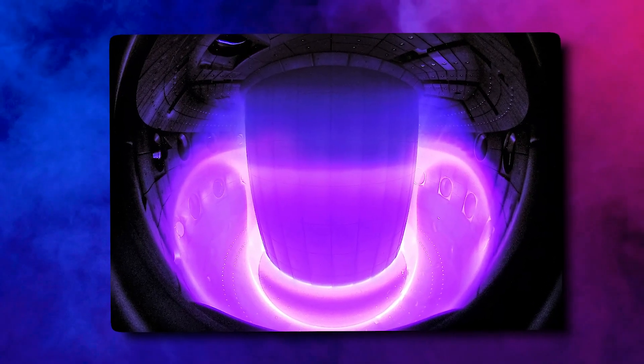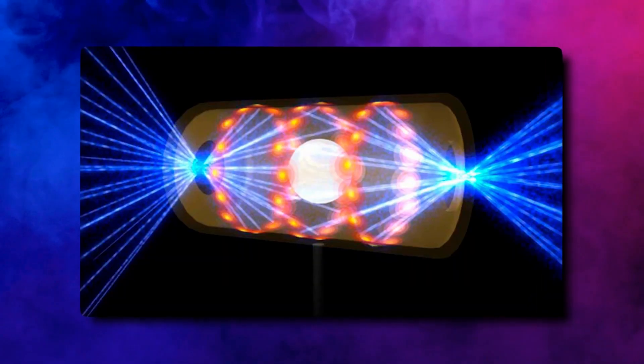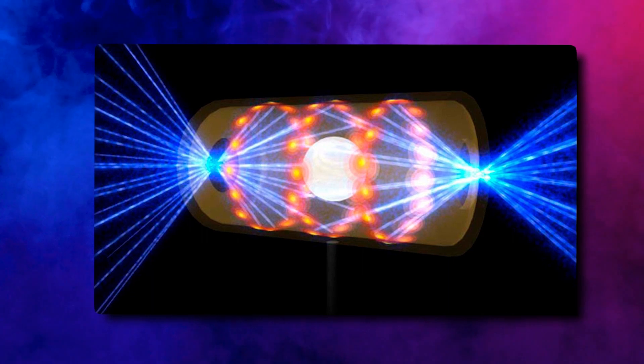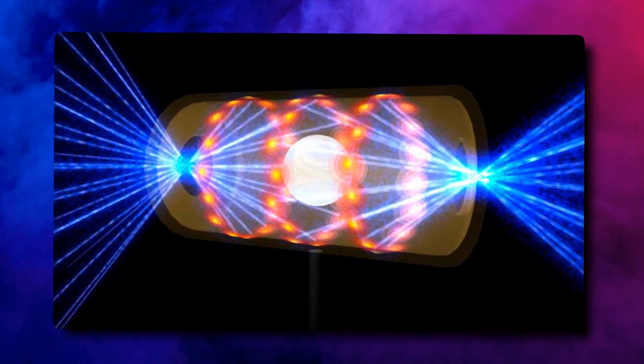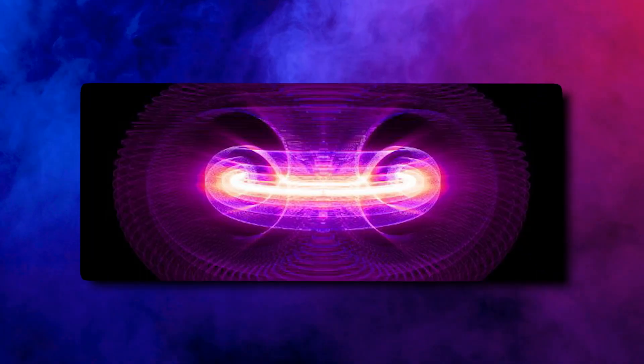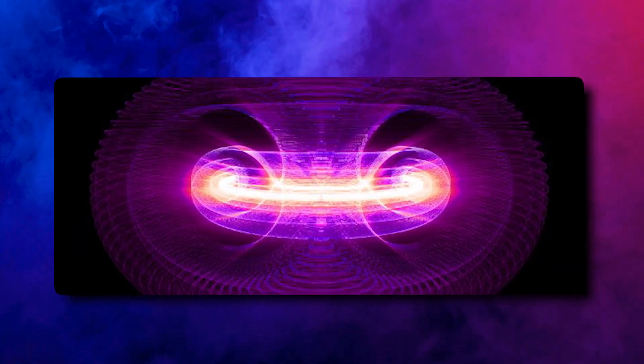Hyperjet Fusion Corporation, based in Virginia, uses a method similar to that of General Fusion, but instead of pistons, it uses 600 plasma guns to shoot plasma jets into the reactor. When the jets come together, they make a plasma shell or liner. This liner then collapses and sets a magnetized target plasma on fire.